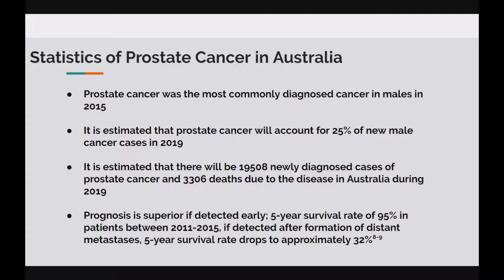Prostate cancer was the most commonly diagnosed cancer among men in Australia in 2015, estimated to account for approximately 25% of new male cancer cases in 2019. If detected early, it may have a very good prognosis, boasting a 95% five-year survival rate in patients between 2011 to 2015. However, the rate of survival may drop to as low as 32% if distant metastases are found. It is expected that in 2019 there will be 19,500 new cases of prostate cancer and 3,306 deaths due to prostate cancer in Australia.